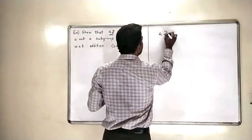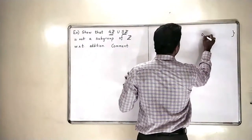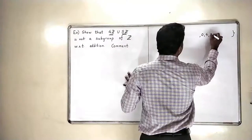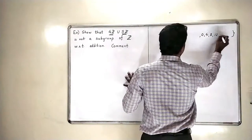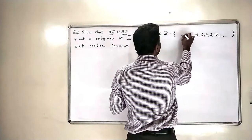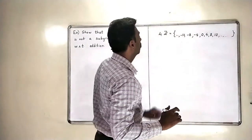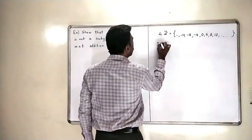Now what is 4Z? 4Z as you know contains all multiples of 4. So 0, 4, 8, 12 and so on. Minus 4, minus 8, minus 12. All positive and negative multiples of 4 means all 4Z.